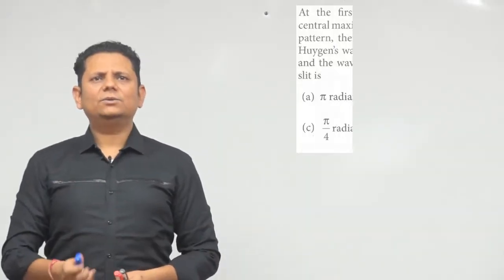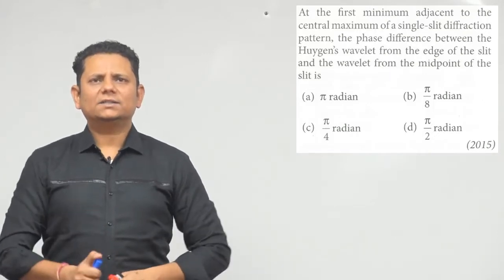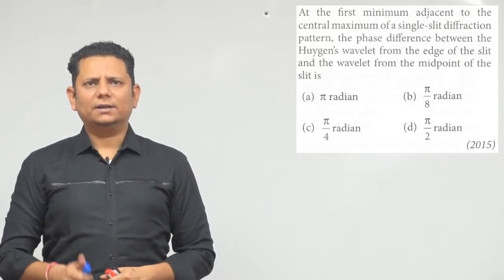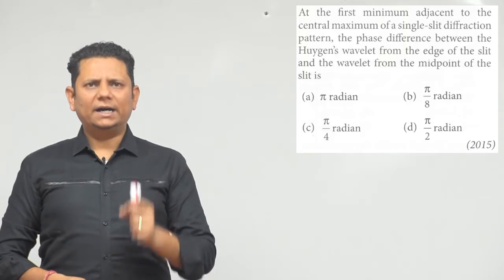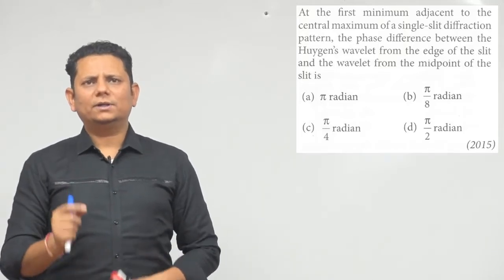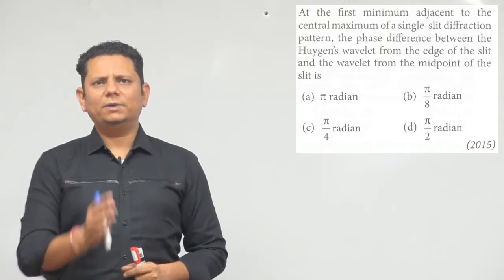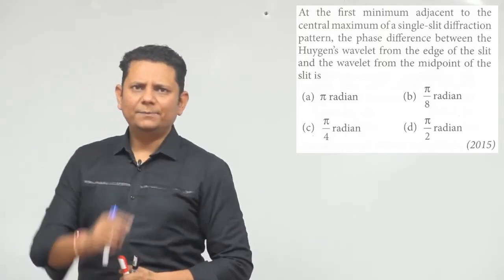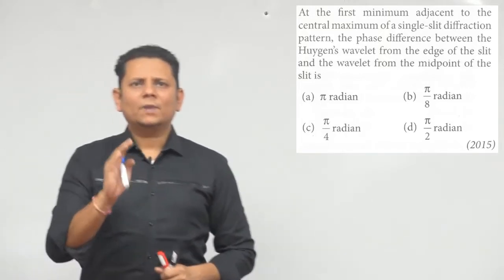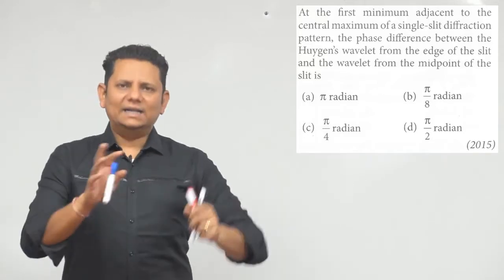The question says: at the first minimum adjacent to the central maximum of a single slit diffraction pattern, the phase difference between the Huygens wavelet from the edge of the slit and the wavelet from the midpoint of the slit will be. The options are pi radian, pi by 8, pi by 4, or pi by 2 radian.